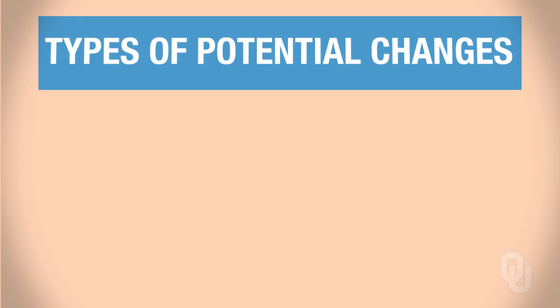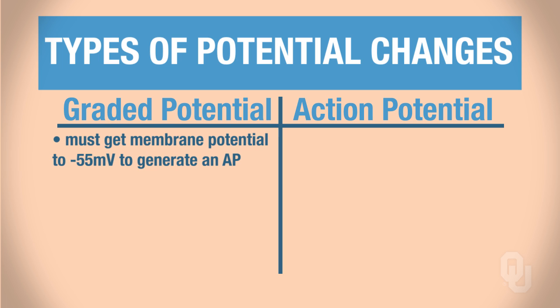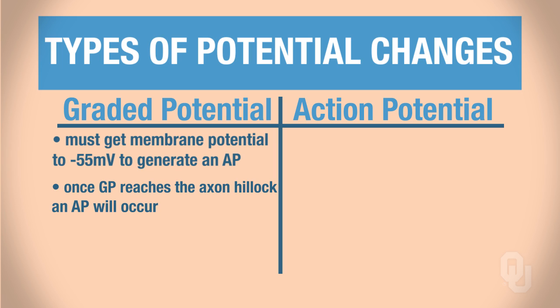With types of potential changes, we have two different types: graded potentials and action potentials. The graded potential must get the membrane potential to negative 55 millivolts in order to generate an action potential. Threshold is negative 55 millivolts — be sure you know that number. The resting membrane potential is negative 70 millivolts. This process occurs on the cell body and the dendrites. Once the graded potential reaches the axon hillock and the membrane potential is negative 55 millivolts, an action potential will occur.